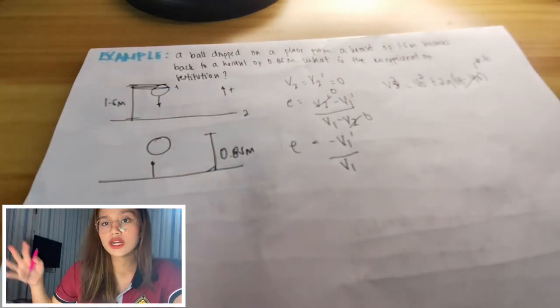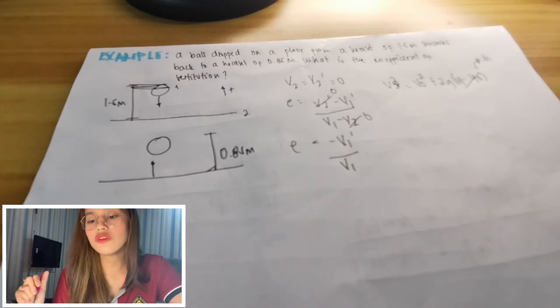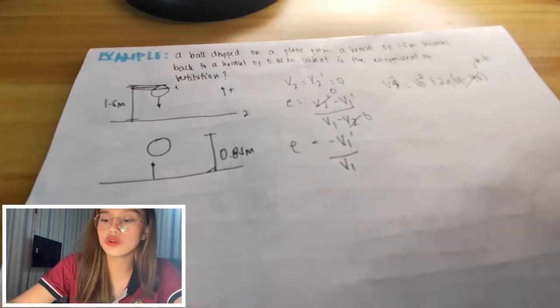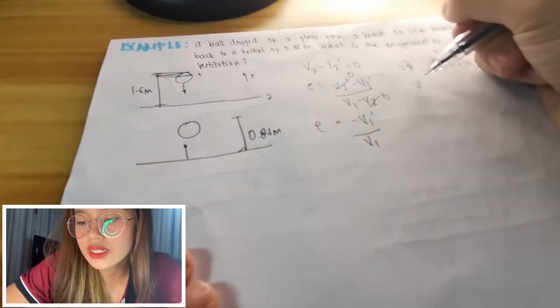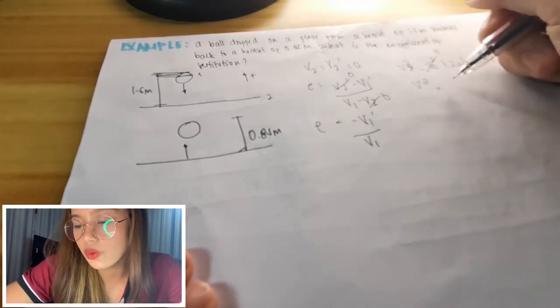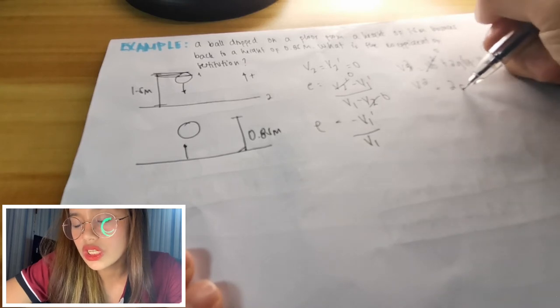a ball drops on the floor with no velocity, so the initial velocity of the ball is equal to zero. So we can remove this. So now,